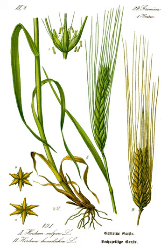Spikelets are arranged in triplets which alternate along the rachis. In wild barley and other Old World species of Hordeum, only the central spikelet is fertile, while the other two are reduced. This condition is retained in certain cultivars known as two-row barleys. A pair of mutations result in fertile lateral spikelets to produce six-row barleys. Recent genetic studies have revealed that a mutation in one gene, VRS1, is responsible for the transition from two-row to six-row barley. Two-row barley has a lower protein content than six-row barley, thus a more fermentable sugar content. High-protein barley is best suited for animal feed, and malting barley is usually lower protein.